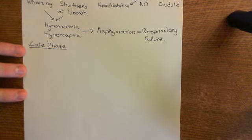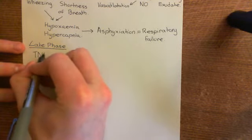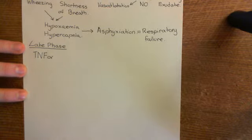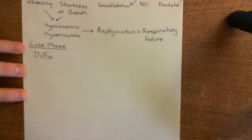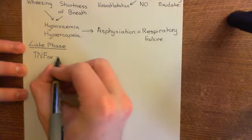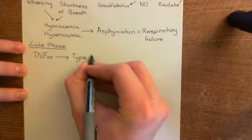The late phase is driven by tumor necrosis factor alpha. As a protein, TNF-alpha takes much longer to produce and release than the lipid mediator leukotrienes. It is released from mast cells into the lamina propria and then acts on endothelial cells of the terminal arterioles, capillaries, and post-capillary venules, causing type 2 activation of endothelial cells.